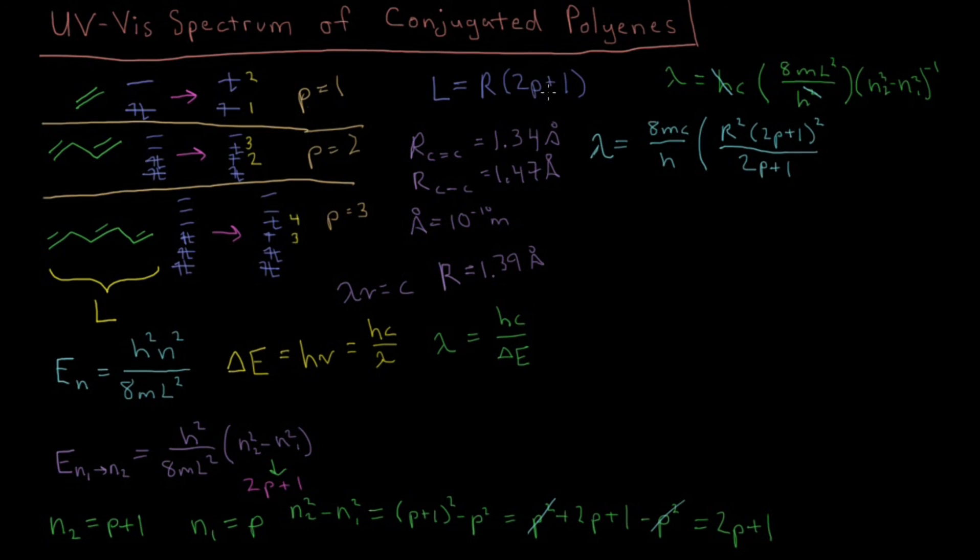Oh, I'm sorry, error note. This is a minus, because we have 2P minus 1 bonds here. So that makes this a minus here as well: 2P minus 1 squared. This is our final equation for the wavelength.